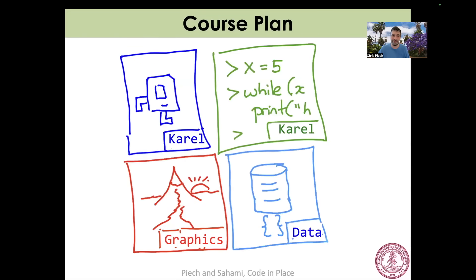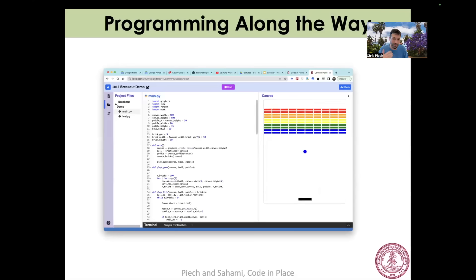So what are we going to do in this Code in Place class? The main learning goal is that you can walk out knowing how to solve problems with Python and find the joy of a new skill. Specifically, there are different units. We'll start by introducing you to the most important ideas of programming through a character called Carol. After that, we jump into console programming where you'll learn classics like variables and control flow. The next section will practice what you learned by making beautiful things in a section called graphics. Then we'll introduce you to the most important data structures — lists and dictionaries. Together, you'll have a solid foundation of programming using Python. Along the way there'll be lessons like this, but mostly you're going to be learning by doing — making wonderful programs you can share with friends and family.